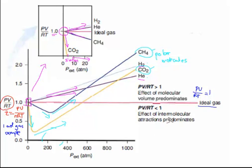The first one is the effect of intermolecular attraction and this happens when the ratio is below 1. If it dips below this line, the reason for that is the intermolecular attraction.